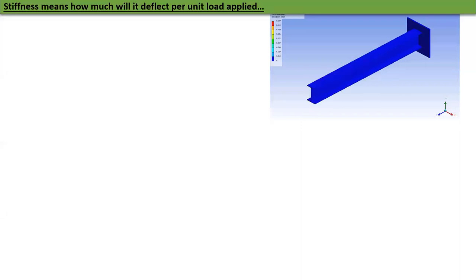Stiffness means how much will it deflect under the presence of unit applied load. If you look at a beam like this, its deflection depends upon material and geometry, and so does its stiffness.